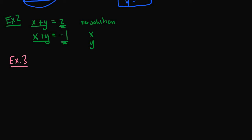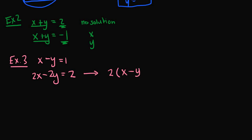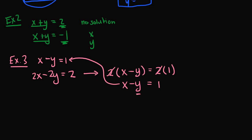For example three, consider the system x minus y equals one and 2x minus 2y equals two. This system has infinite solutions because the second equation is just twice the first. If we factor out two from the second equation, we get 2 times (x minus y) equals 2 times one, the twos cancel, and we're left with x minus y equals one — the same as the first equation.